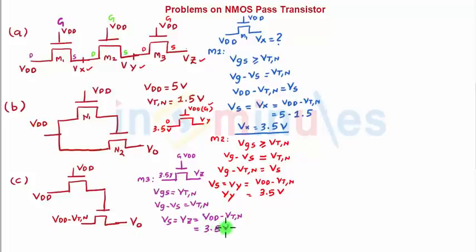So with that, I got my Vx, I got my Vy, and I got my Vz, and I completed problem number one. If you have understood the basic concept of pass transistor logic, this should not be that much of a problem for you.